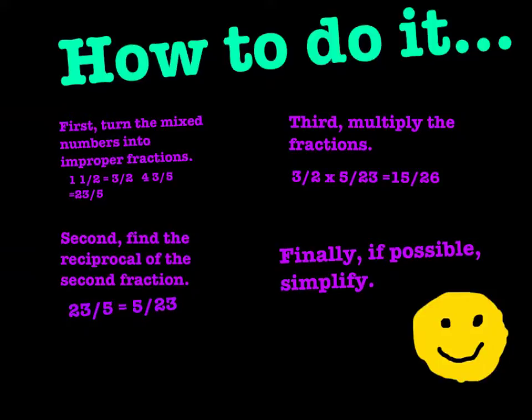First, turn the mixed numbers into improper fractions. 1 and a half would be 3 over 2, and 4 and 3 fifths would be 23 over 5. Second, find the reciprocal, or the opposite, of the second fraction. 23 over 5 would become 5 twenty-thirds.